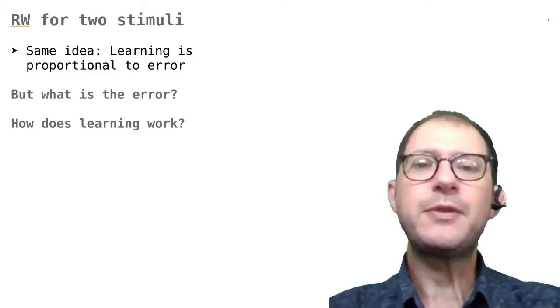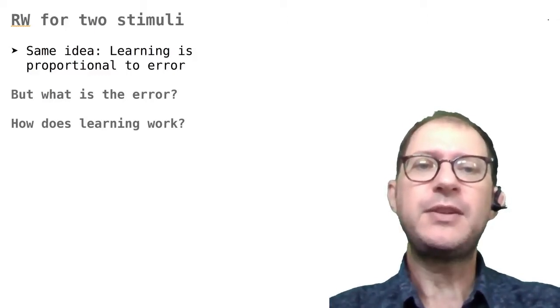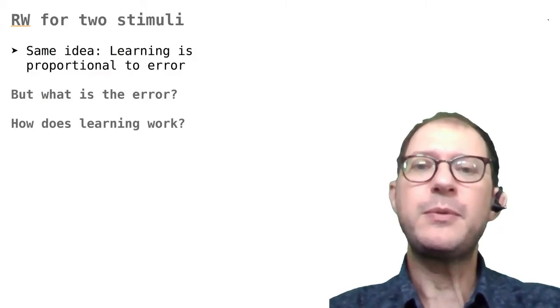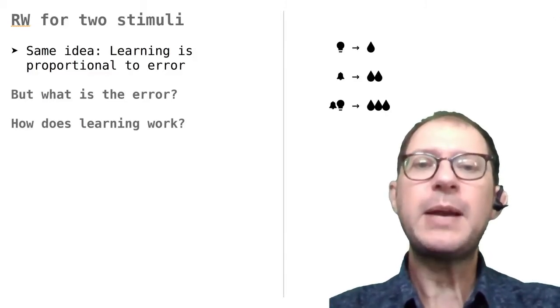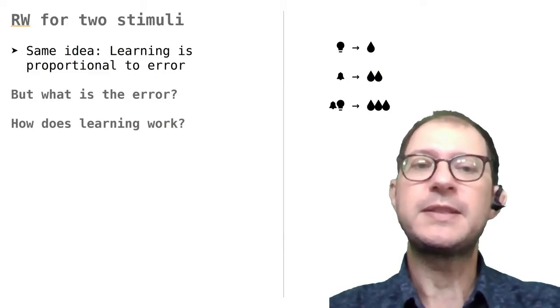If you remember, the error is the difference between what you should do and what you really do. In our first lesson on RW, we called this the wishdo and the realdo. So we will start with what the animal does when there are two stimuli instead of one. RW makes this really simple for us. When two stimuli are there, their associative strengths sum.